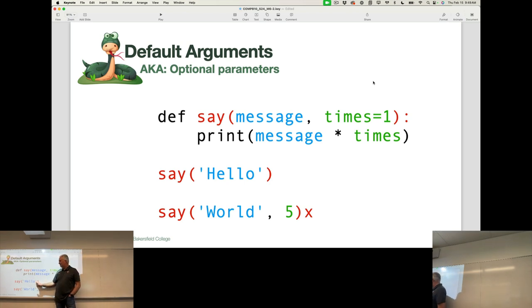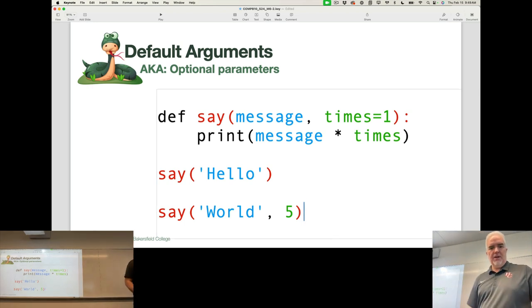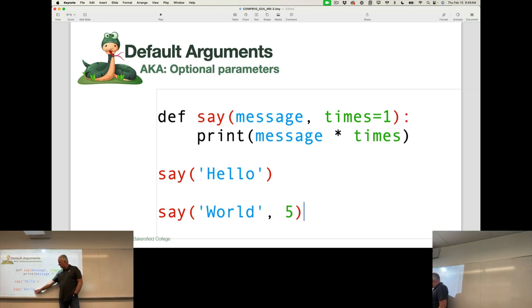So if I call that function like this with just a string, then it will by default print it one time. If I do this, I don't know why there's an X there, let me get rid of that because that's confusing. If I do this, it will say this string five times.